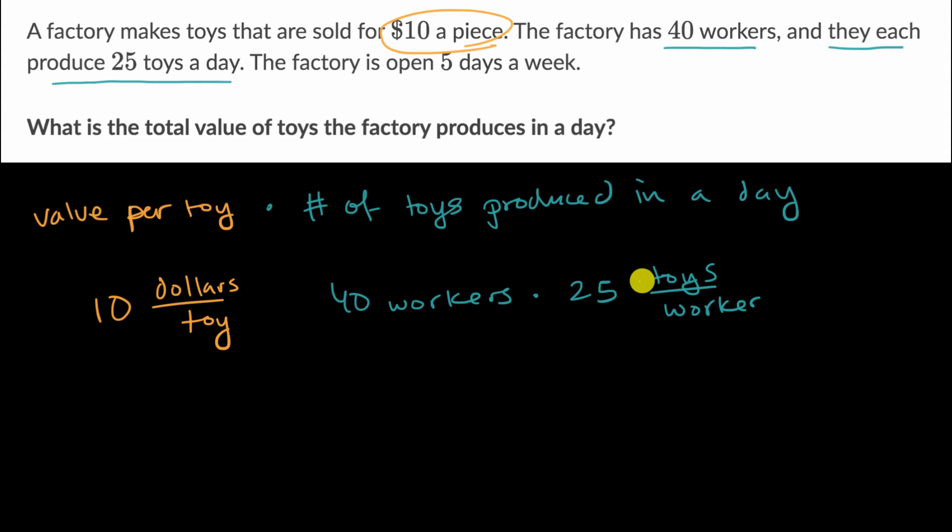Now I could say 25 toys per worker per day, and that makes the units a little complicated. Or I could just realize that this entire expression I'm creating is talking about one day. So the total number of toys produced in a day is going to be the product of these things. And we can see that the units work out just to make sure that we're getting in the right direction.